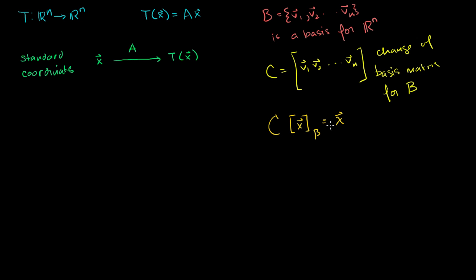Or if you multiply both sides by C inverse, you get that if I start with the standard coordinates for x, I can multiply by C inverse and get the B coordinates for x — the alternate non-standard coordinates. We've seen both of these before. So let's apply that to this diagram. If I have x and want to write it in non-standard coordinates, I multiply it by C inverse.